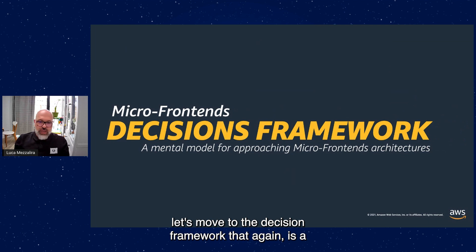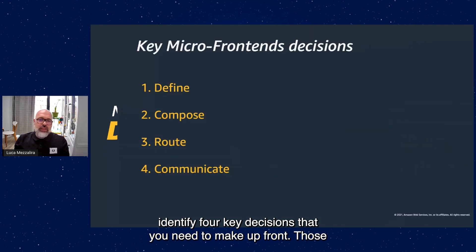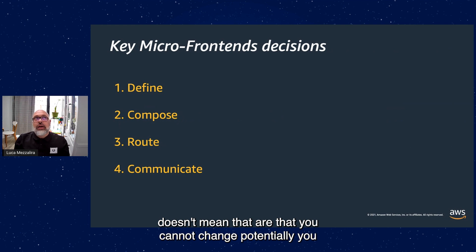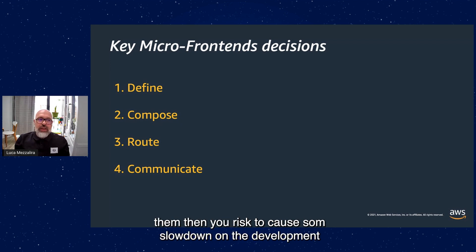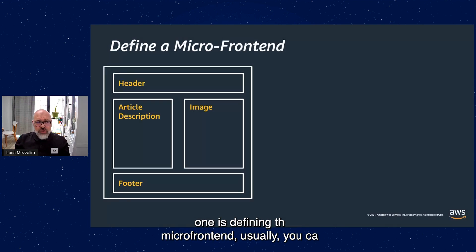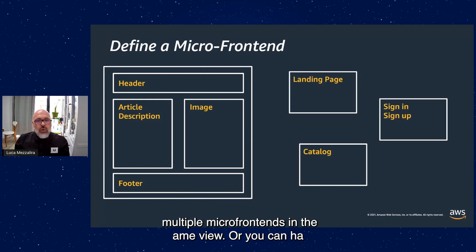Let's move to the decisions framework, which is a mental model for approaching micro-frontend architectures. I identified four key decisions you need to make upfront. They don't mean you cannot change them during the project, but in reality, they are very difficult to change — and the moment you do change them, you risk slowing down development. So be mindful. The first is defining a micro-frontend. You can have two ways: multiple micro-frontends in the same view (horizontal split), or a micro-frontend that represents one or multiple views (vertical split).